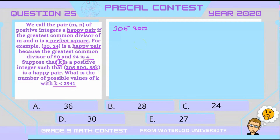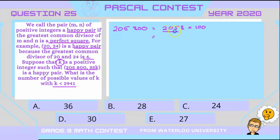Prime factorization is when you take any positive integer and write it as a product of prime numbers, and this can be done in a unique way. Let's split 205,800 into 2058 times 100. We need to further split it up because our goal is to get all products as prime numbers. 2058 is divisible by two, so I can break it into 2 times 1029.